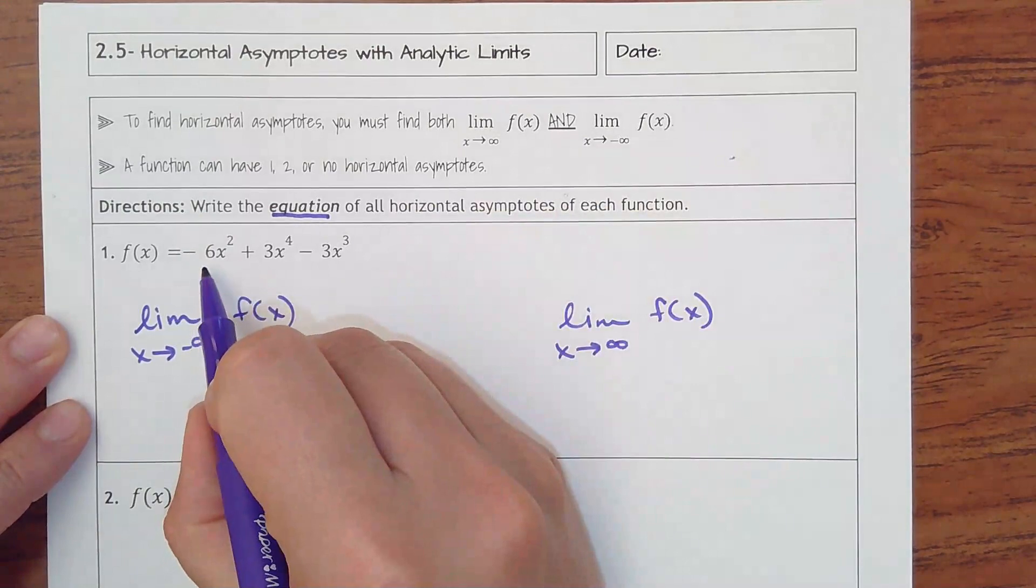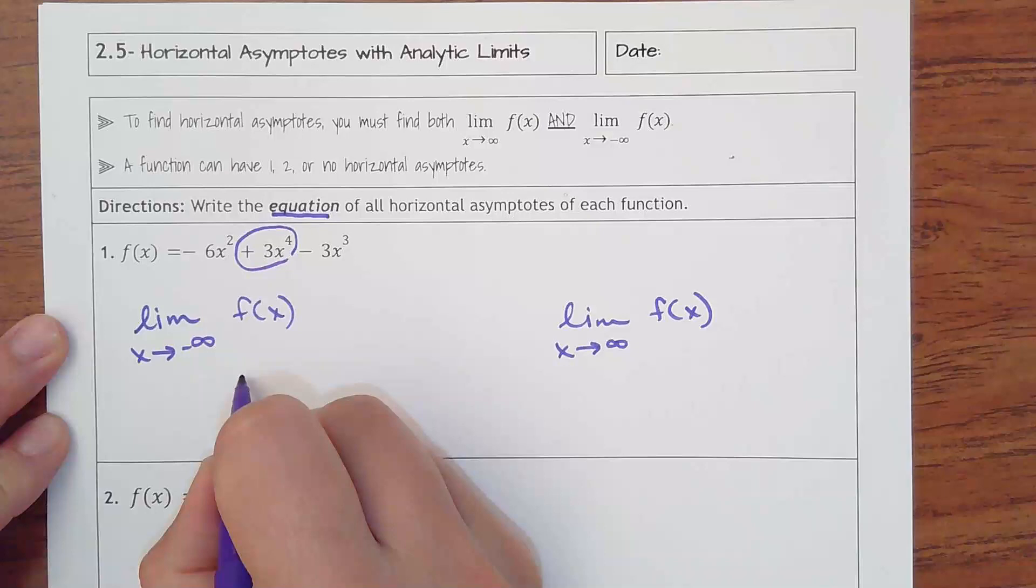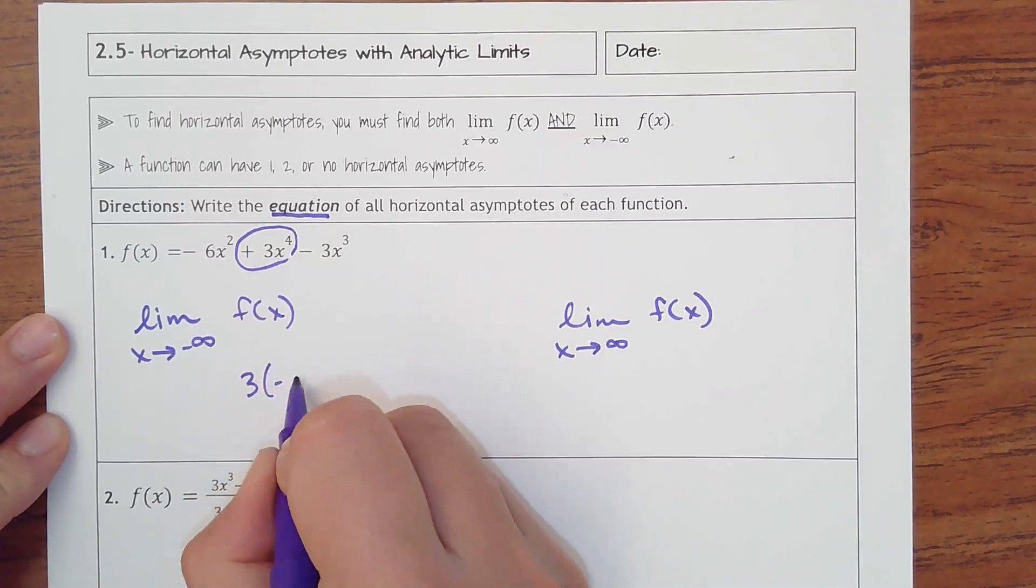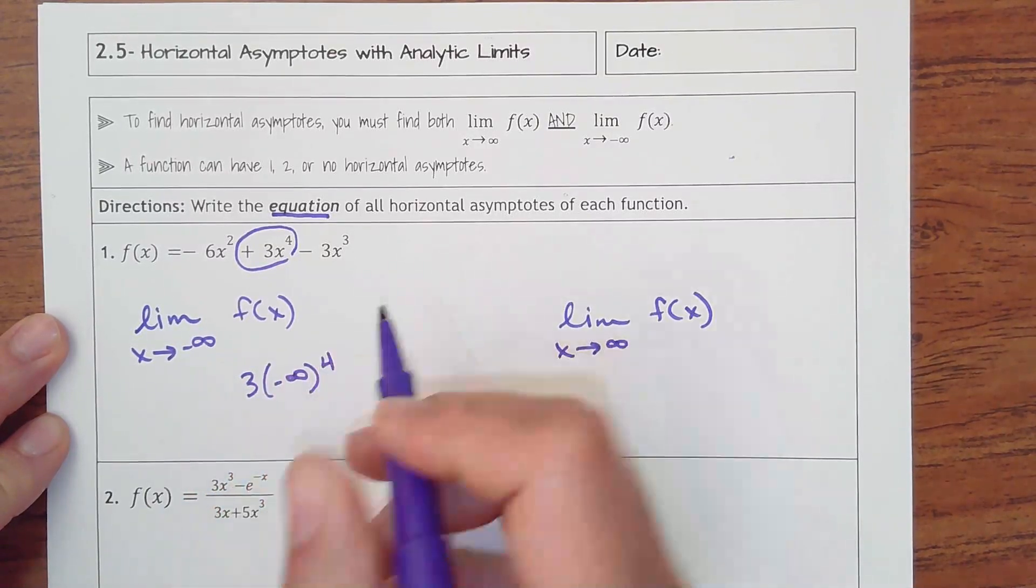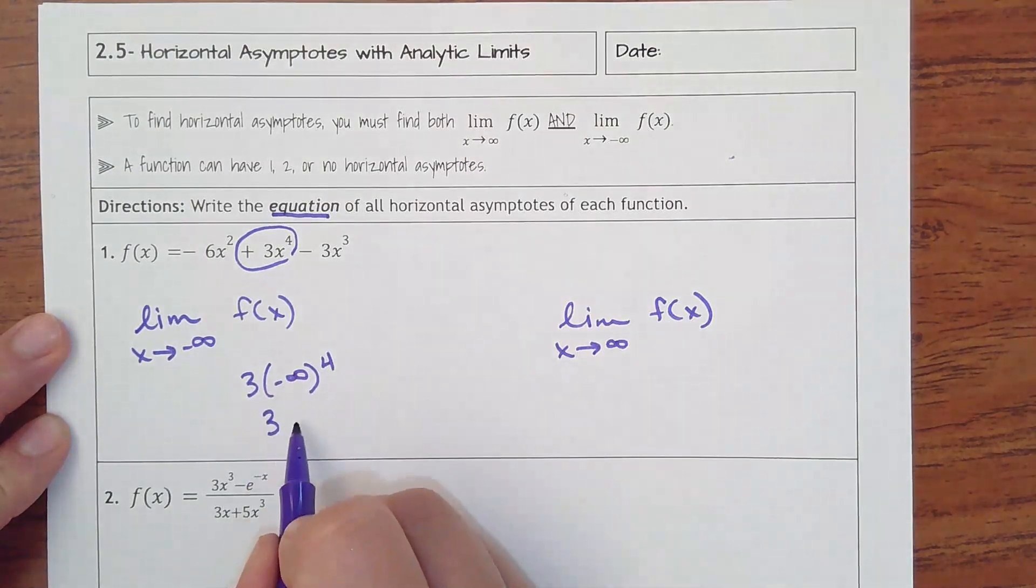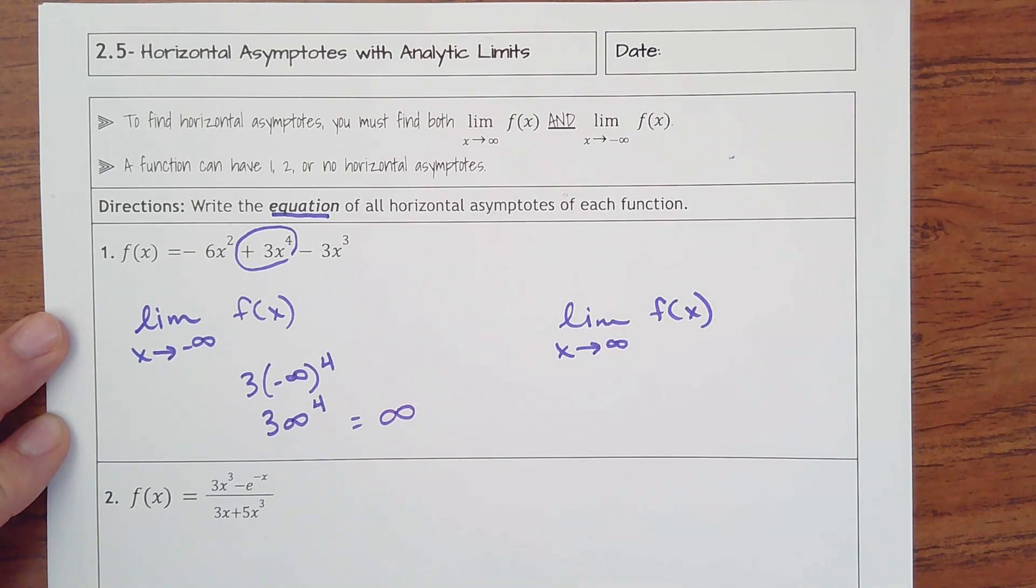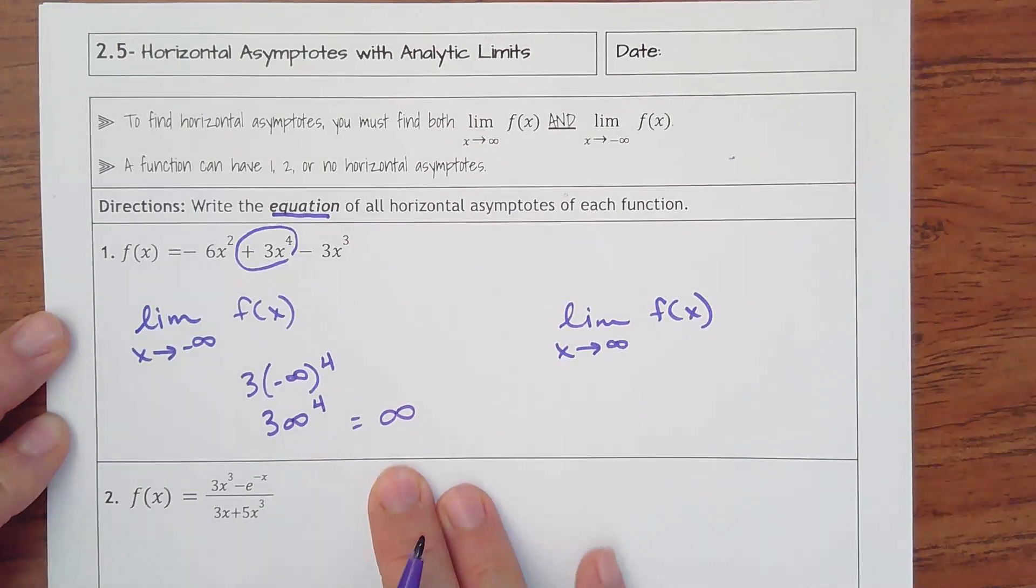So in a polynomial like this, I want to pick the highest degree term, so I'm really just using the 3x to the fourth, and I'm plugging in negative infinity. A negative number to the fourth power becomes positive times 3 is all positive. So a big number to the fourth times 3 is really just positive infinity.